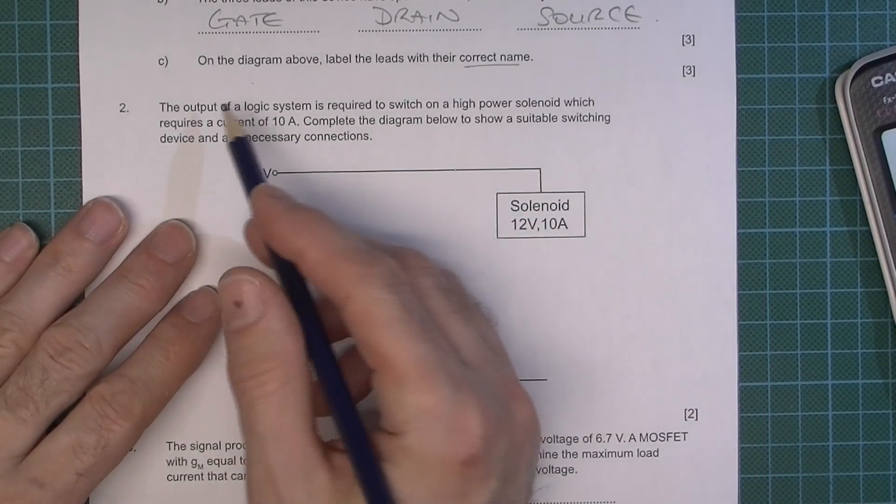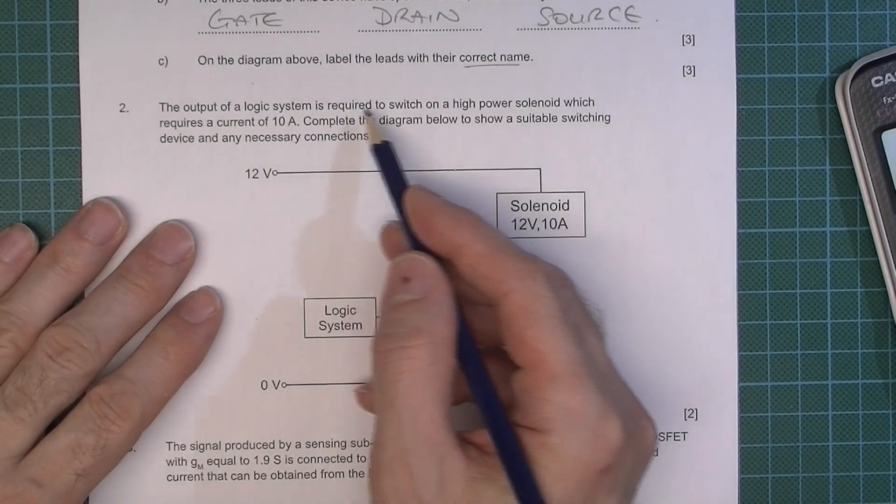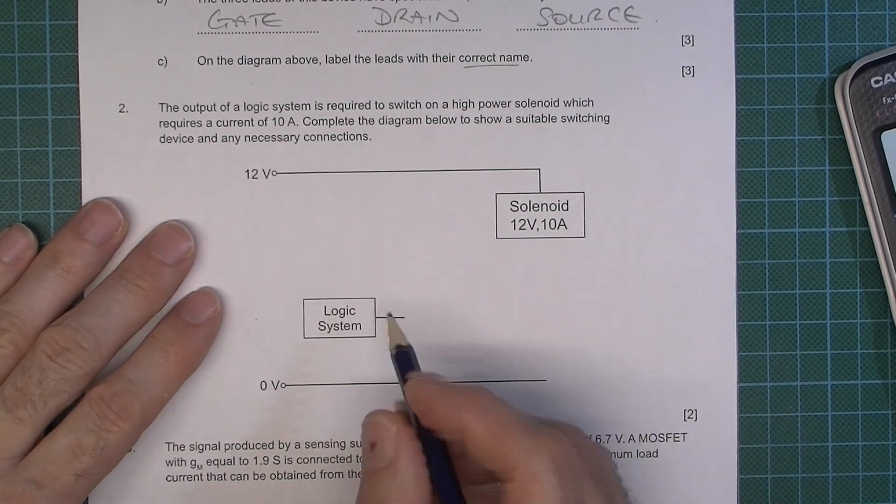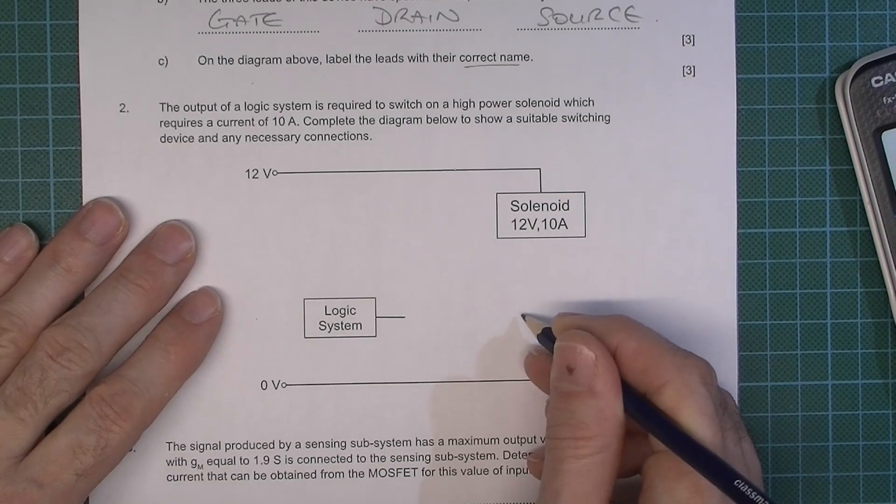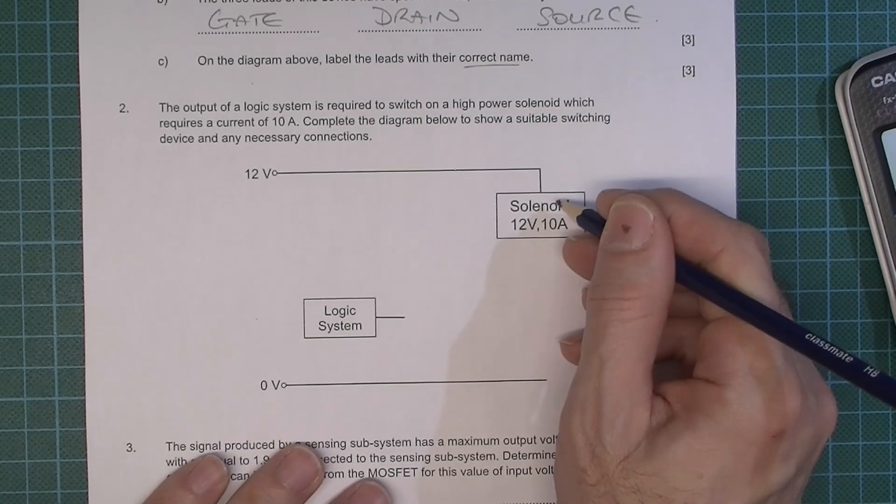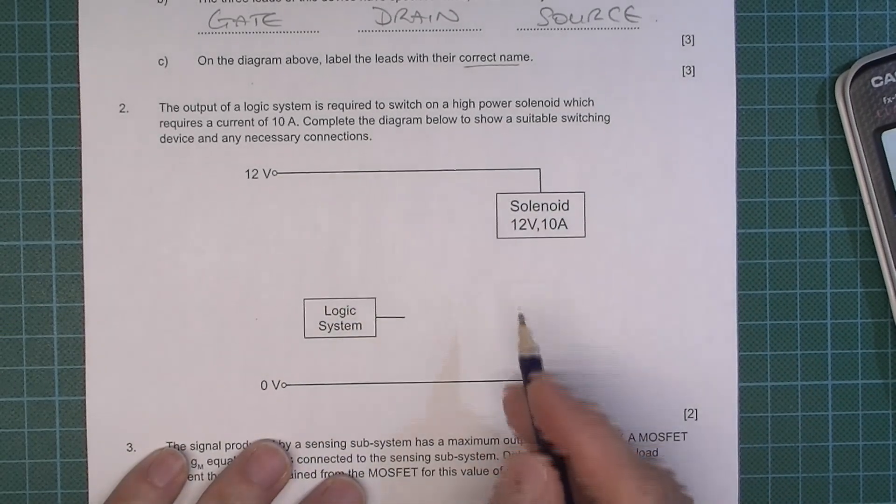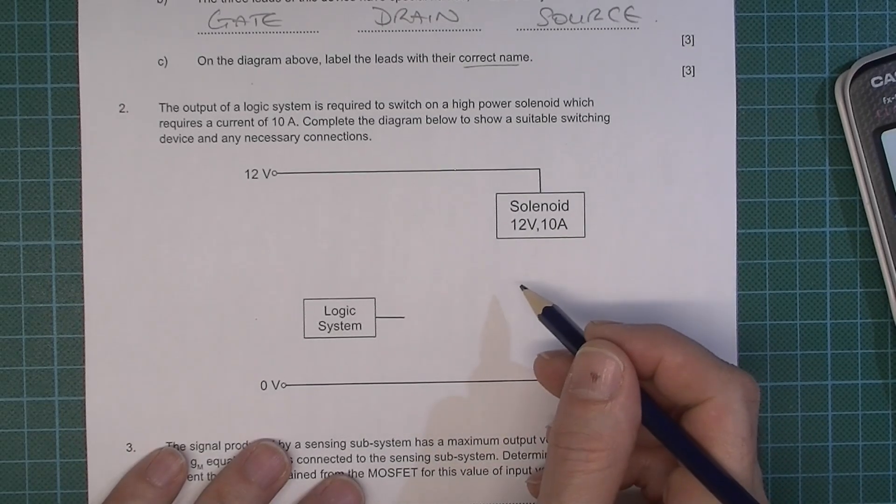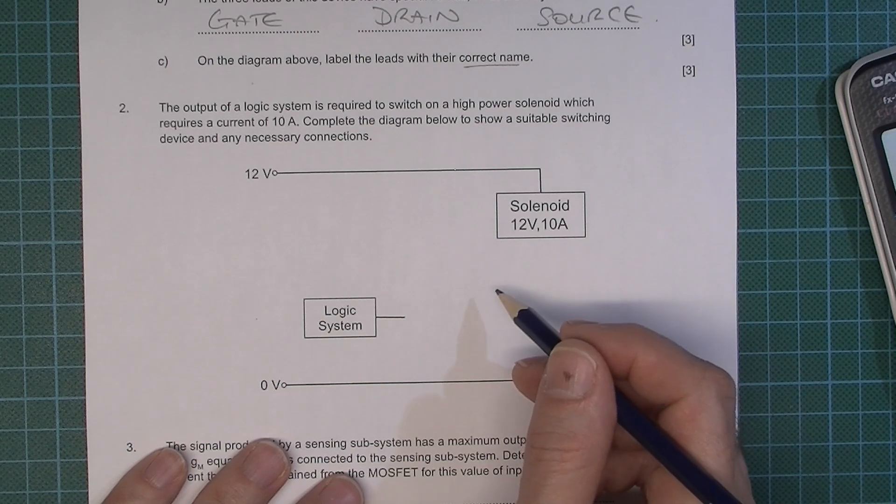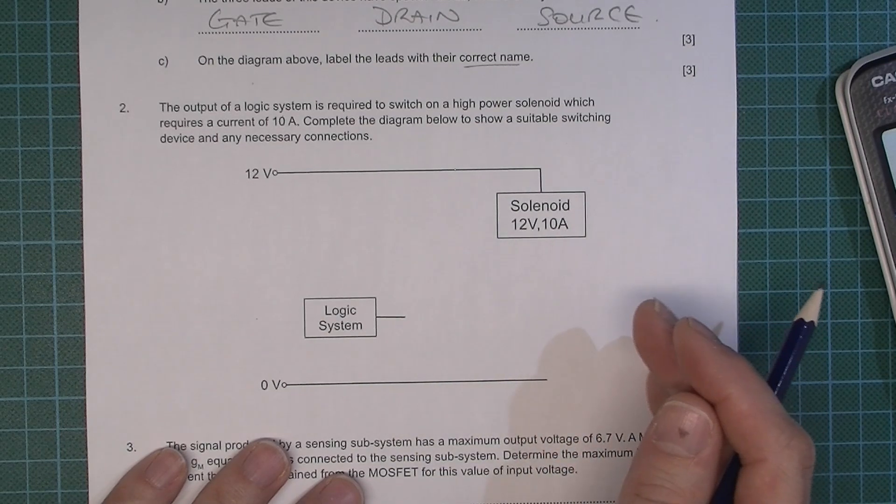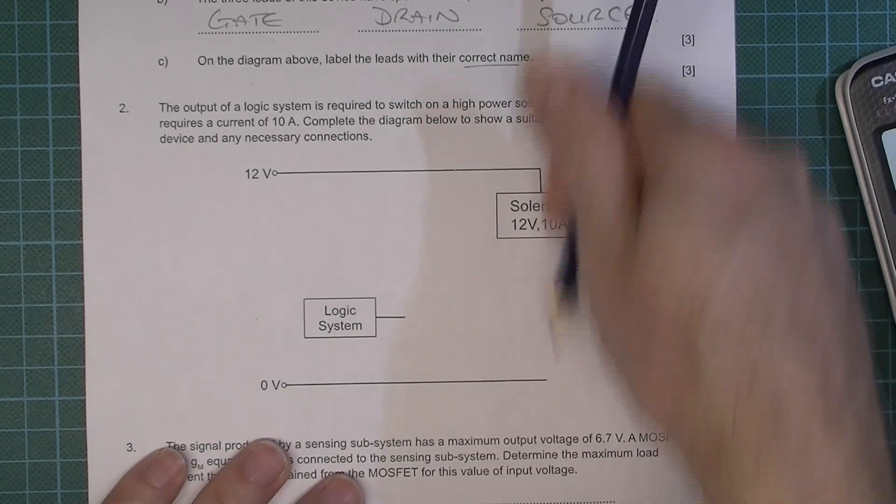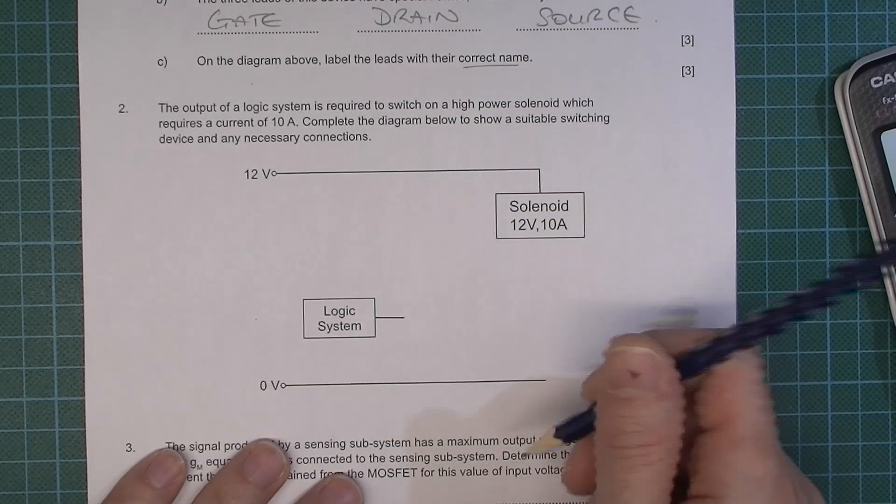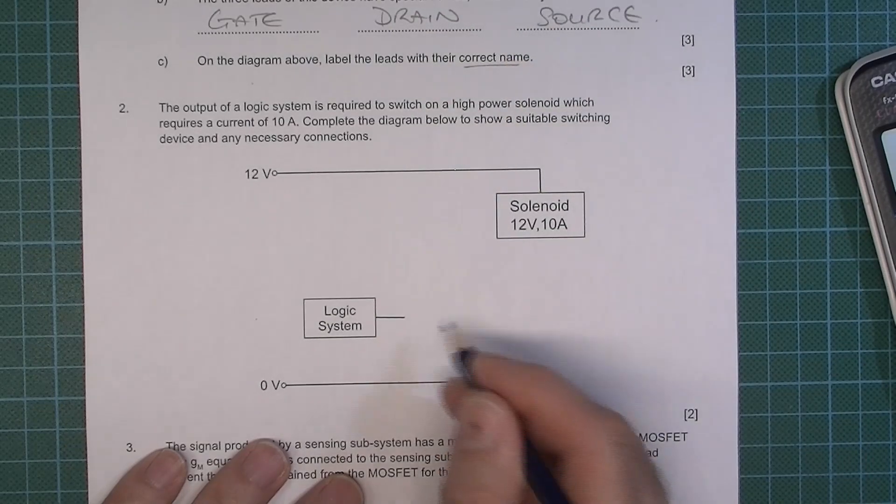Next question then. The output of the logic system is required to switch on a high power solenoid. OK, so we're going to have a logic system, MOSFET switching the solenoid. OK, it doesn't actually say we have to use a MOSFET but MOSFETs are quite good for that because they have a small linear region and they therefore tend to be working either in cutoff when you cut the current off so it's like an open switch or saturation which is when you have the full current going through.